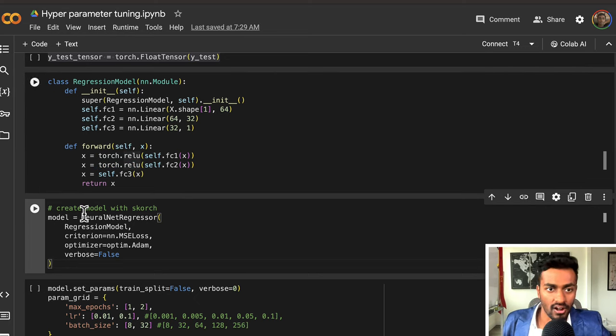Next we will take our regression model and then package it within a Scorch neural network regressor. We're going to use the mean squared error loss because again this is a regression problem, and then we will use the Adam optimizer.